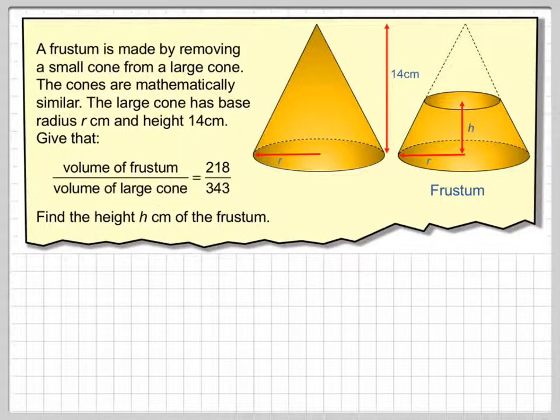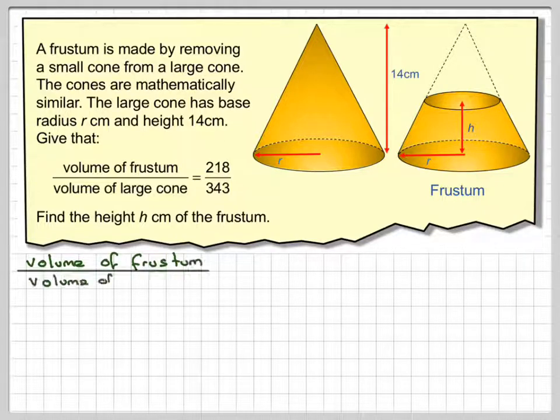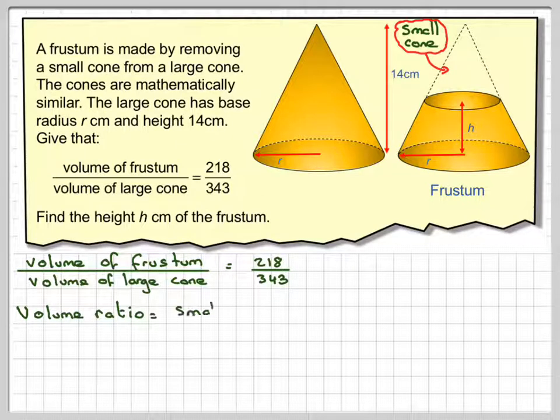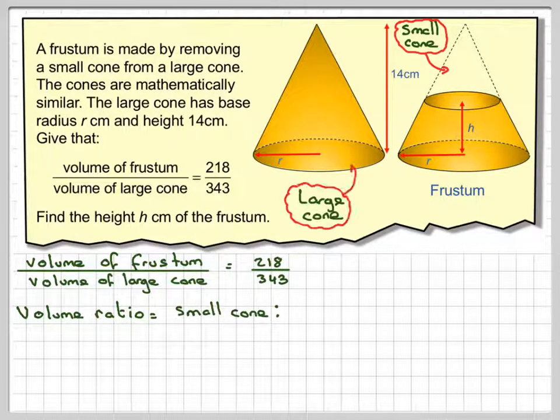What we've got, if we've got the volume of the frustum over the volume of the large cone, is the volume ratio of the frustum to the large cone. What we need to do is find the volume ratio of the small cone to the large cone. So the small cone is this one here. The volume ratio will be the small cone to the large cone.